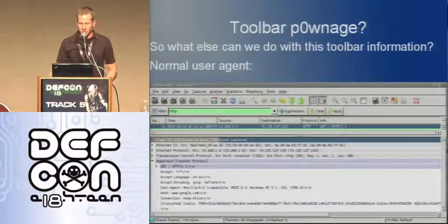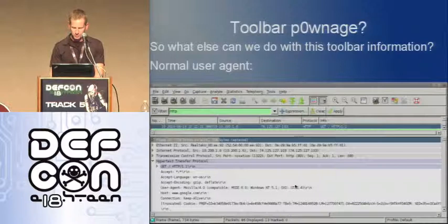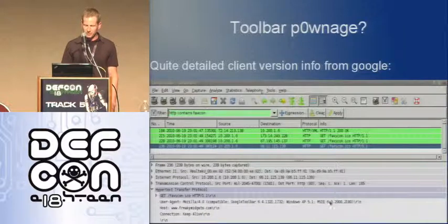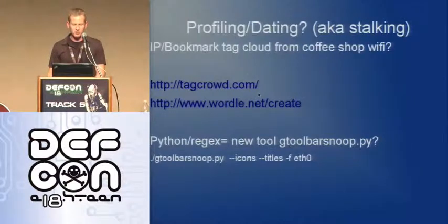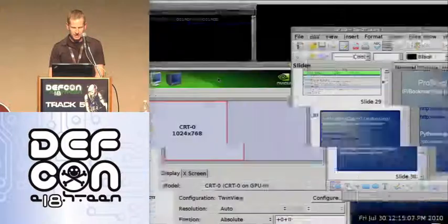Here's a normal user agent from a browser — Mozilla 4, IE 6, and it even says Google Toolbar 6.4. But the user agent from the Google toolbar itself says Google Toolbar 6.4.13211731 and also tells you the exact version of Microsoft Internet Explorer. Once you know a little more information, you can start to figure out what vulnerabilities that guy has. And if you can actually get at the XML, you could do some tag cloud bookmarking if you're just sitting on your coffee shop Wi-Fi. So I took some time with Python and created a new tool to see what I could get out of that.